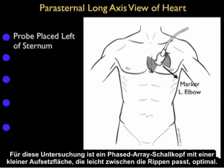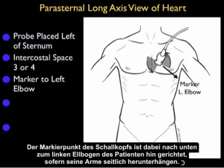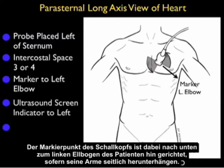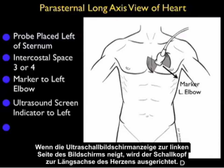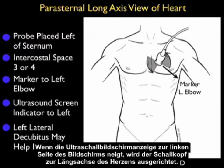For this examination, it's optimal to use a small footprint phased array type probe that can easily sit between the ribs. We're going to place the probe just left of the sternum at about intercostal space three or four, with the marker dot on the probe aimed down towards the patient's left elbow. That's with the caveat that the ultrasound screen indicator would be towards the left of the screen. This will align the probe in the long axis of the heart.